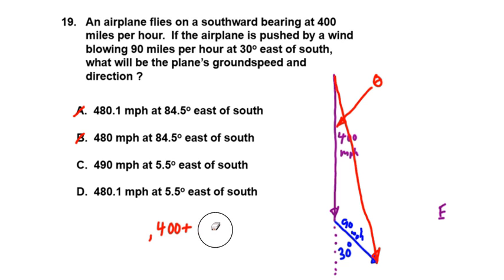So that's going to be the vertical component. The horizontal component is just going to be 90 sine of 30 degrees.